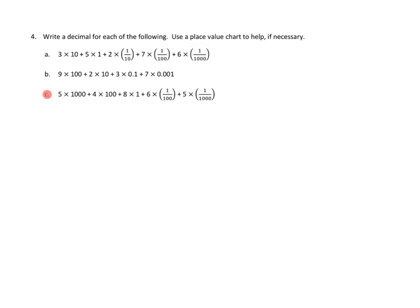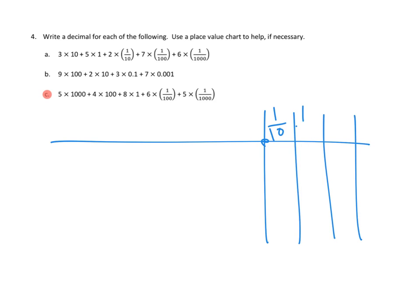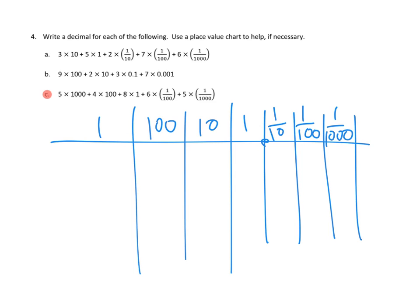Let's take a look, finally, at number four. Number four is write a decimal for each of the following. Use a place value chart to help, if necessary. You know what? I'm going to scratch in a little place value chart here quickly. I'm going to do a place value chart that has a decimal here. Let's see. We've got tenths, hundredths, thousandths. Here we've got ones, tens, hundreds, thousands. And we go on from there, right? And I'm going to do that place value because I think it's going to help us to lay this one out. Let's see. So, this one is in expanded form.